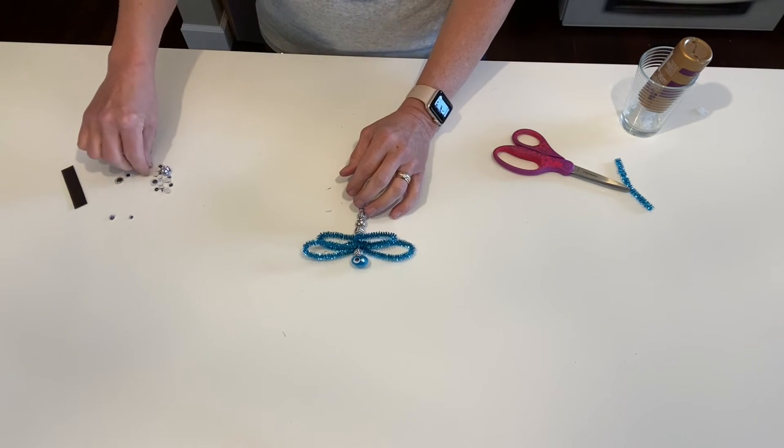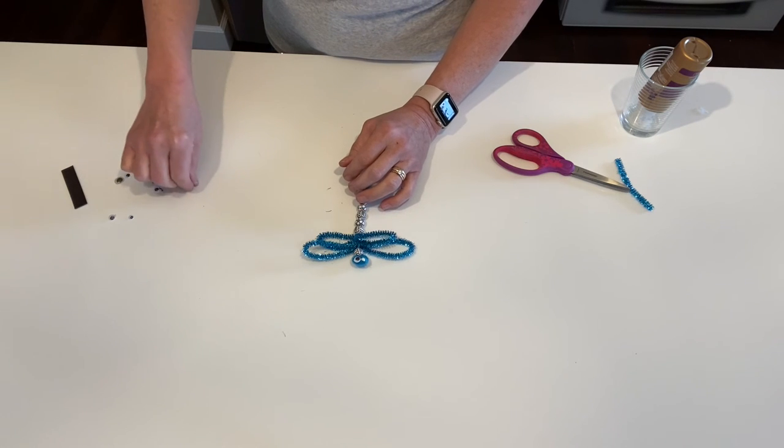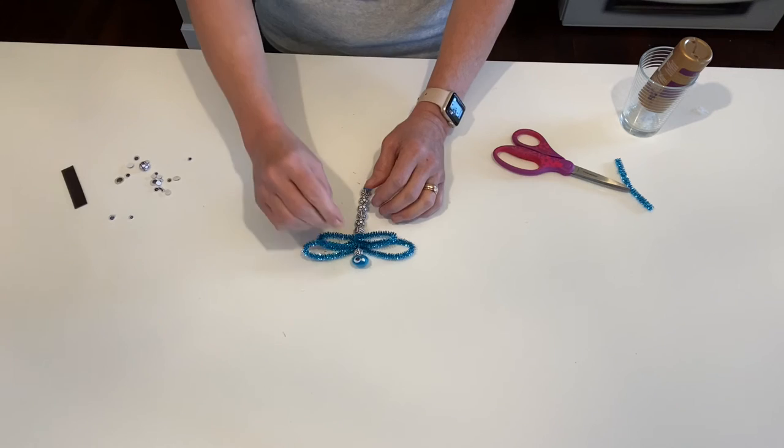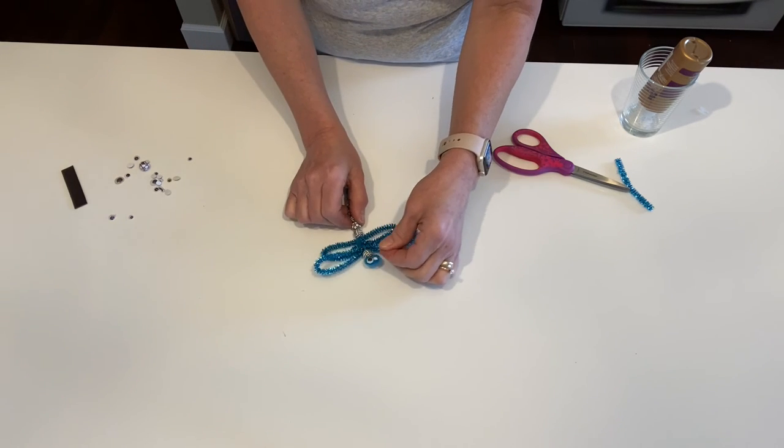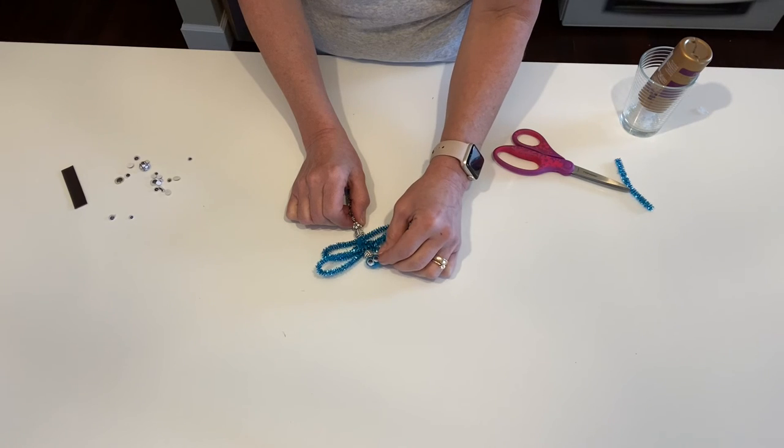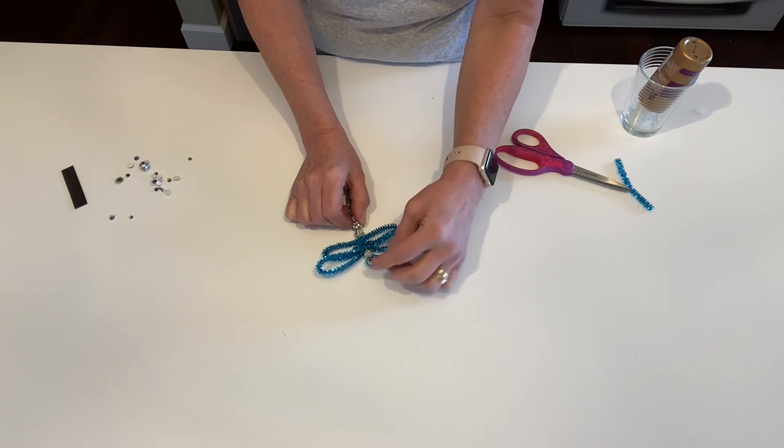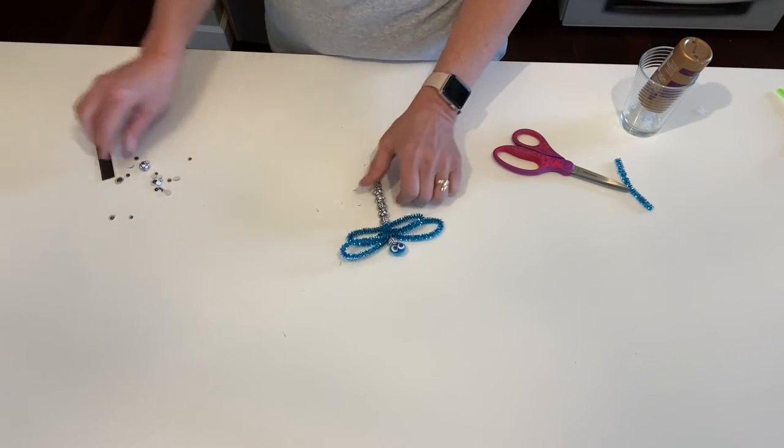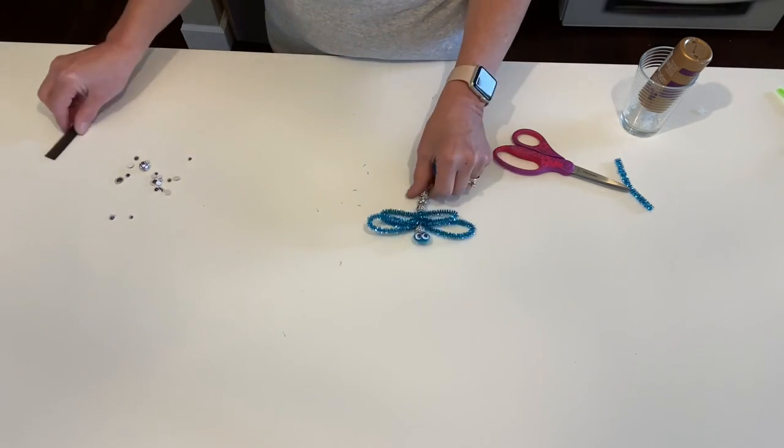I included a strip of magnet in your kit that's easily cut with scissors. If you want to make it magnetic, you can cut a piece of this magnet strip. If you have access to a hot glue gun, that works really well to glue it on the back. But you can just glue it on here - you've got to really let it dry.